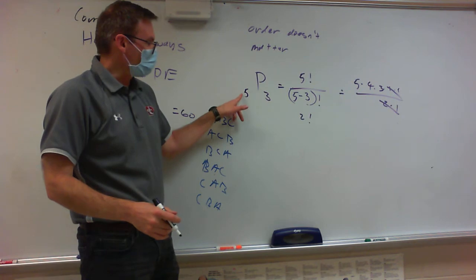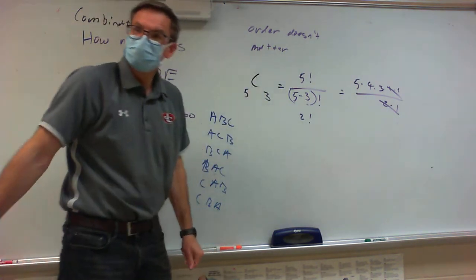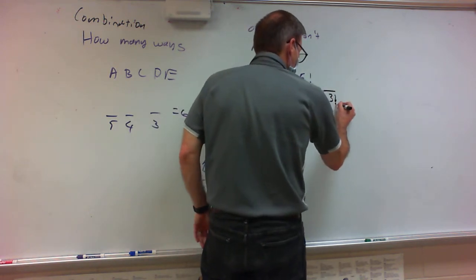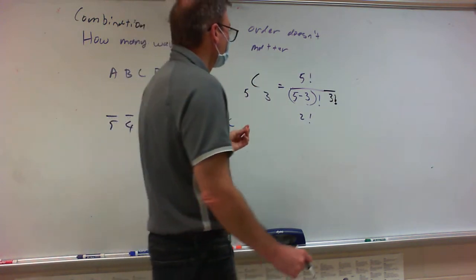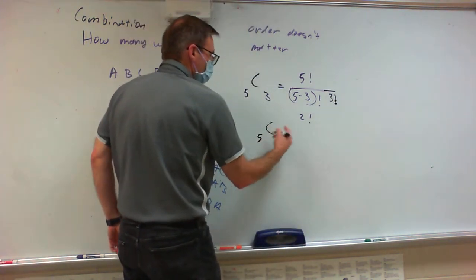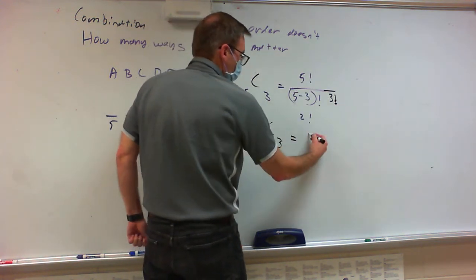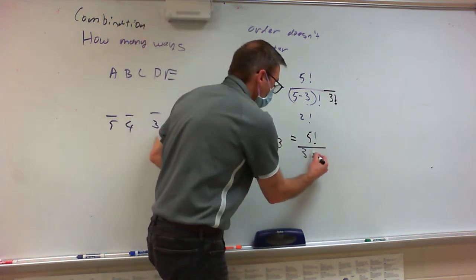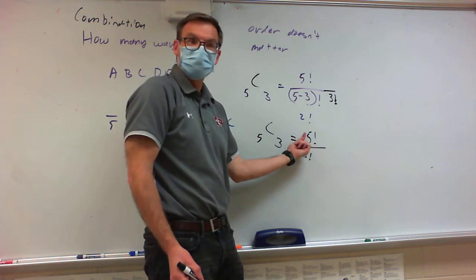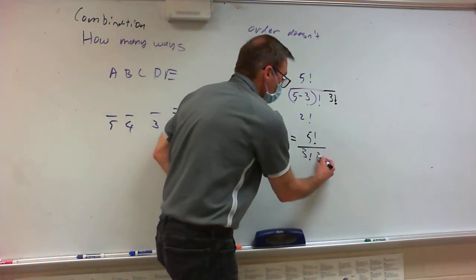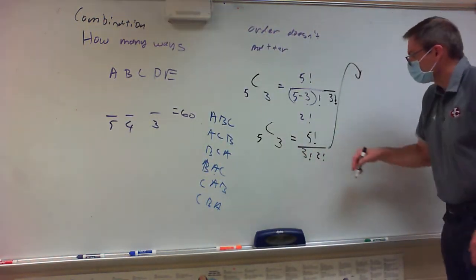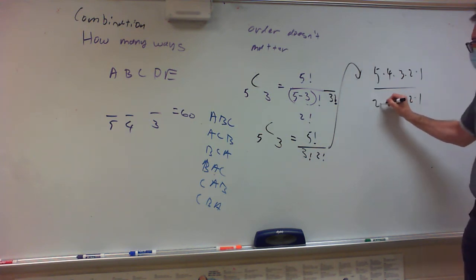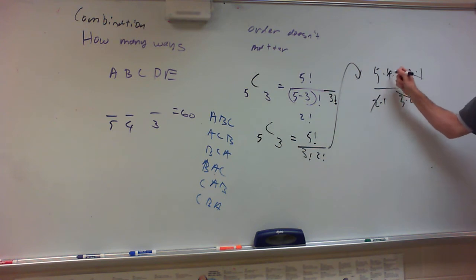The difference is instead of 5P3, it's going to be 5C3. The official formula: it's 5 factorial on top, over 3 factorial times 2 factorial — you get two numbers on the bottom, both with factorials, and they have to add up to 5. So 5 factorial is 5 times 4 times 3 times 2 times 1, over 3 times 2 times 1 and 2 times 1. Those cancel. 2 goes into 4 two times, and this gives us 10.